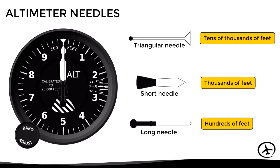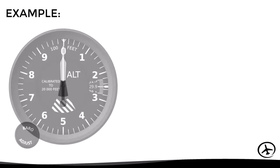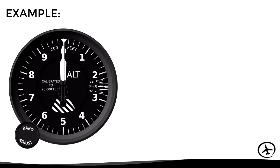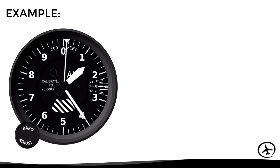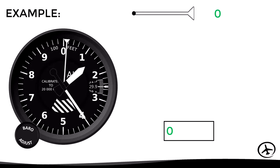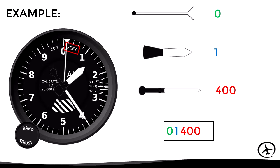Let's see some examples of reading the altimeter using the three needles together. When all three needles point zero, the aircraft is exactly at the barometric reference level. When the triangular needle is between zero and one, the short needle is between one and two, and the long needle points number four, the altimeter reading is 1,400 feet.